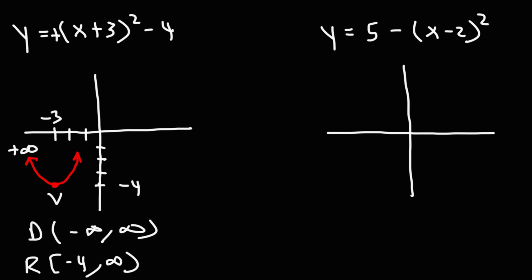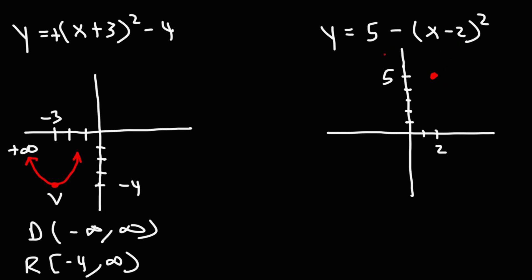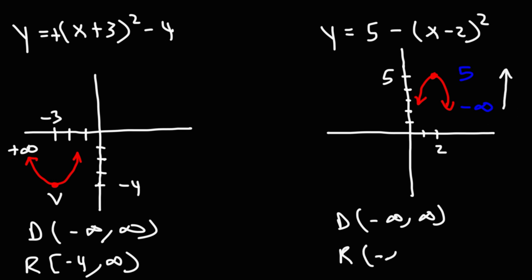For the next one, the graph is going to be shifted up 5 units. Setting x minus 2 equal to 0 gives x equals 2, so it's shifted to the right 2 units. The vertex will be at 2 comma 5. There is a negative sign in front of the x squared term, so this graph opens downward. The domain is going to be all real numbers. The highest y value is 5 and the lowest is negative infinity, so the range — going from low to high — is negative infinity to 5, and 5 is included.